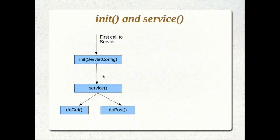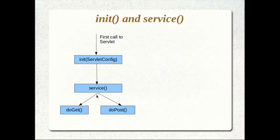After the init method runs, the service method runs, because it's triggered by the call to the servlet. The service method looks at the request and decides which method of the servlet actually needs to run — it decides whether doGet or doPost has to run, depending on the HTTP method used. In our previous tutorial, the HTTP GET method triggered doGet and HTTP POST triggered doPost. It's actually the service method that looks at the HTTP method received and calls doGet or doPost accordingly.